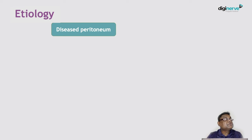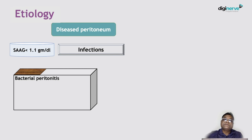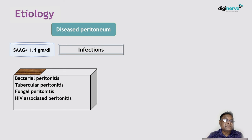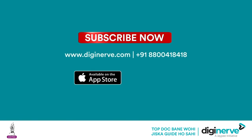When the peritoneum is abnormal or diseased, the SAAG value is typically less than 1.1 g/dL. Infection is one of the most common causes of peritoneal involvement in this setting, and it may be due to bacterial peritonitis, tubercular peritonitis, fungal peritonitis, or HIV-associated peritonitis.